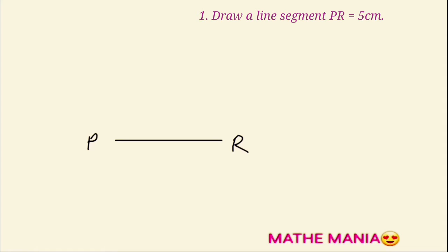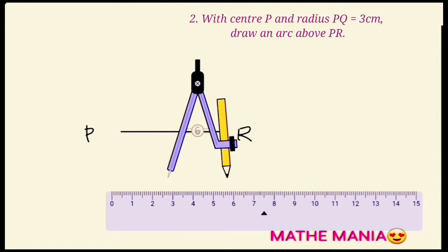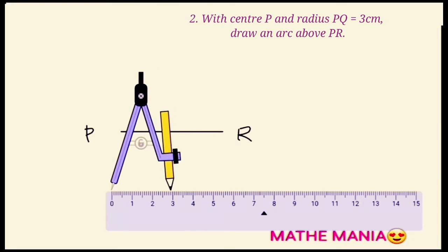Next, we have to construct triangle PQR above this line segment PR. As PQ is equal to 3 cm, we will take radius of 3 cm on our compass using a scale.